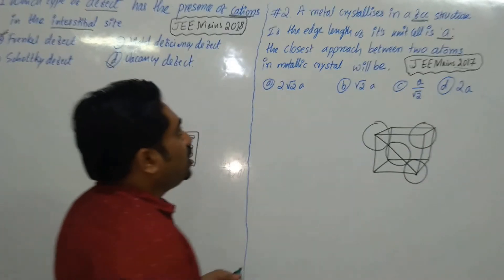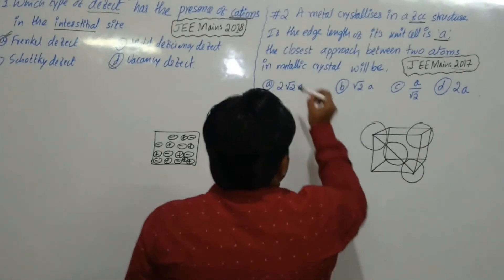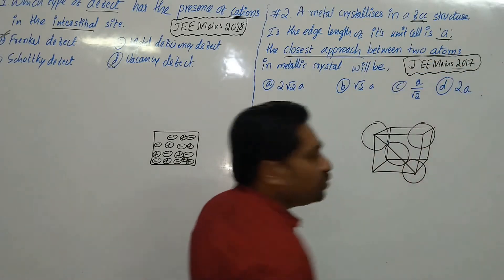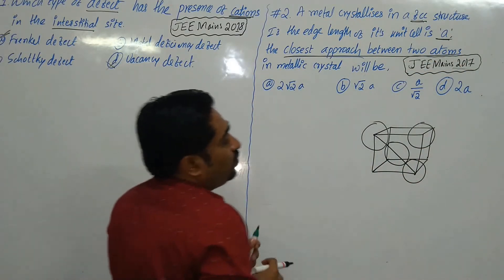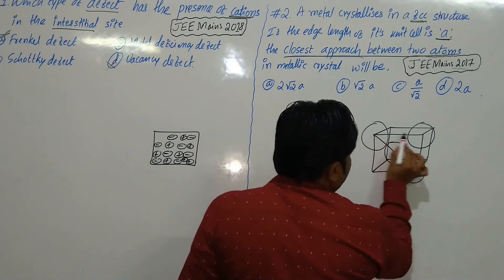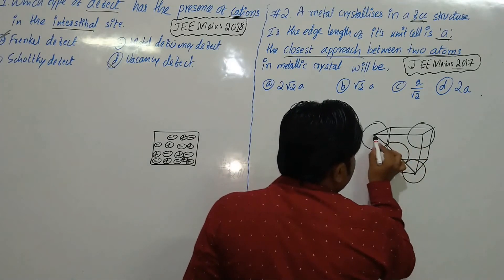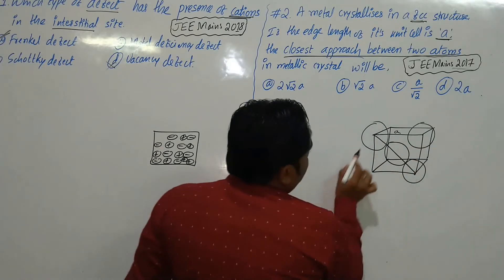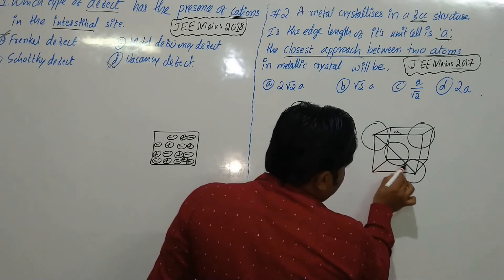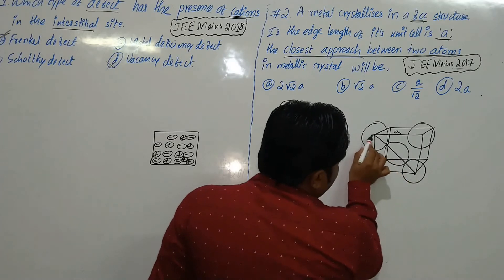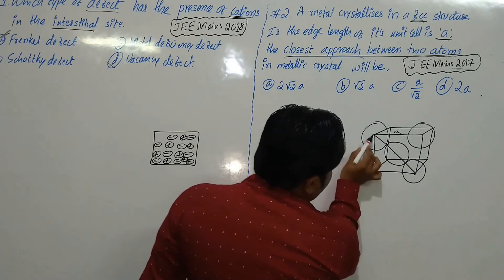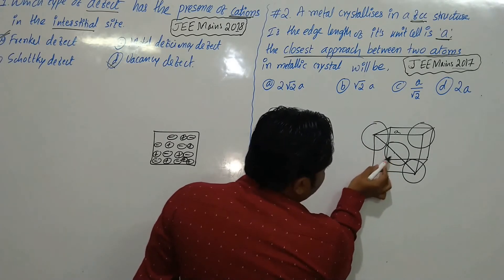Now we need to calculate the closest approach between two atoms. Consider particles along the edge — the distance between corner particles along an edge is A. But particles also touch along the face diagonal. Two particles touch along half of the face diagonal, so we need to evaluate both distances.